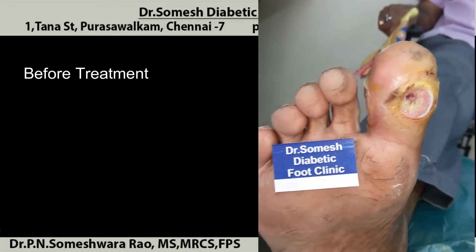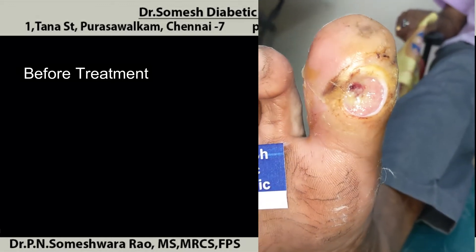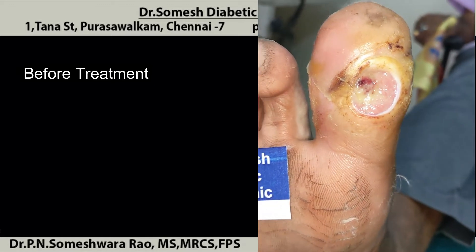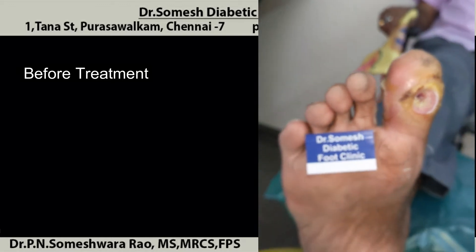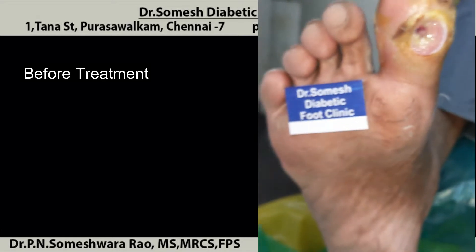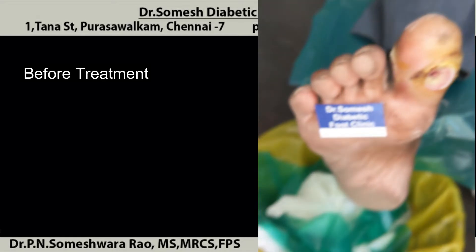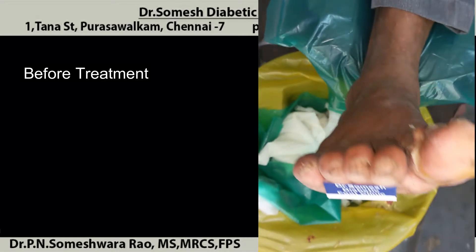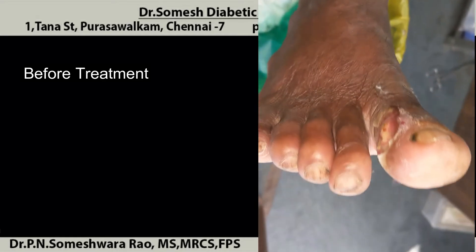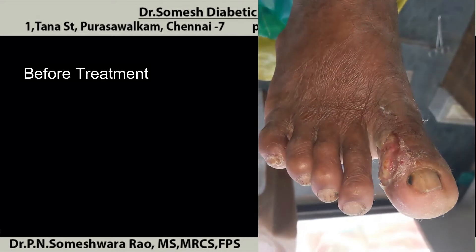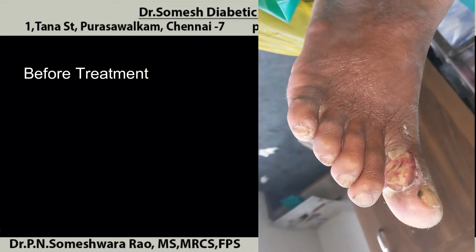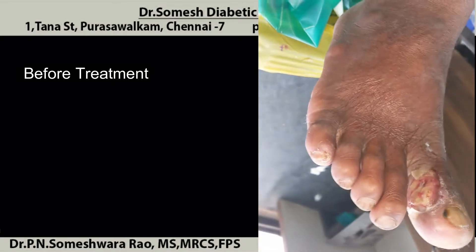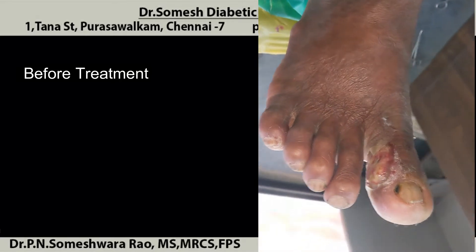We will discuss this patient with a non-healing ulcer which turned into gangrene of grade 2. Non-healing ulcers are responsible for 80 to 85 percent of the reasons patients with diabetes get amputated.